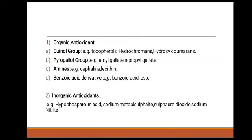The first type is organic antioxidants. A variety of organic compounds selectively act as antioxidant preservatives. They are classified into four classes: first, the quinol group, examples being tocopherols, hydrochromanols, and hydroxychromans; second, the pyrogallyl group, examples being amyl gallate and n-propyl gallate; third, amines, examples being cephalins and glycithin; and fourth, benzoic acid derivatives, examples being benzoic acid and its esters.